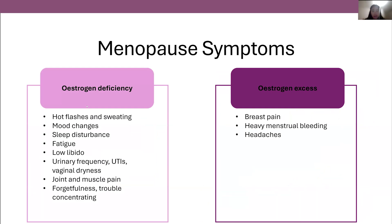Early in menopause, because of the fluctuation in hormone levels, estrogen levels can be high or low, but with time they decline and symptoms favor estrogen deficiency. We're probably very familiar with the common symptoms of hot flashes, but there are estrogen receptors all over the body, so there's a myriad of symptoms sometimes people don't realize are caused by menopause — such as mood changes, sleep disturbance, fatigue, low libido, urinary and vaginal symptoms, joint and muscle aches, forgetfulness, brain fog, and trouble concentrating. With estrogen excess you may experience breast pain, heavy menstrual bleeding, and headaches.